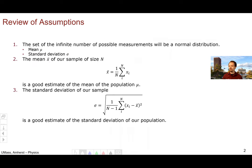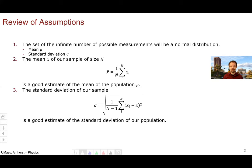Let's begin by reviewing the assumptions of data that we are working under. We're assuming that for a continuous variable, such as the measurement of a thickness of a nickel, there are an infinite number of possible measurements and that these will follow a normal distribution characterized by a mean and a standard deviation. We're also assuming that the mean of our sample, X-bar, of sample size n, is a good estimate of the mean of the entire population of all possible measured values, and that the standard deviation of our sample is a good estimate of the standard deviation of our population.